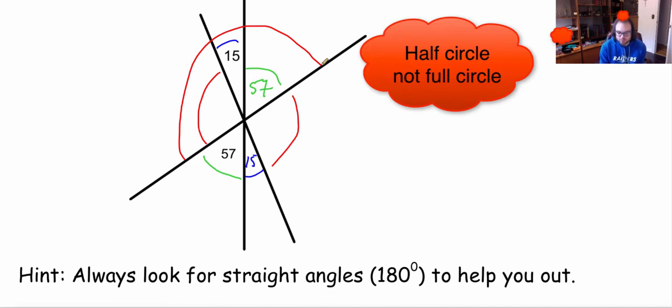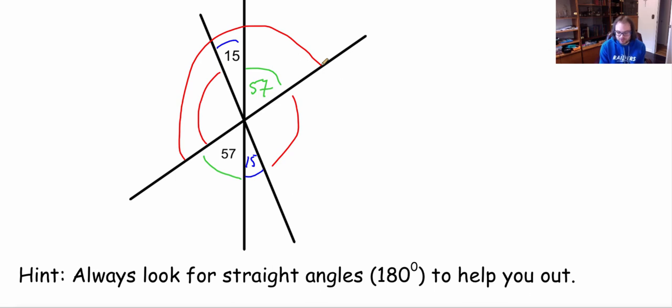So if I take away the blue and the green from that circle I can figure out the red. So we're going to have 180 take away 15 take away 57 is going to be equal to we're going to call this x. So we go 180 take away 15 is 165 take away 57 is going to give me 108. So I have this here is 108 and the opposite must be 108 as well.